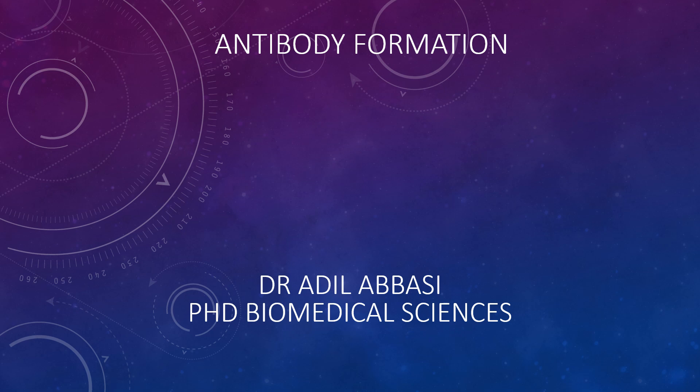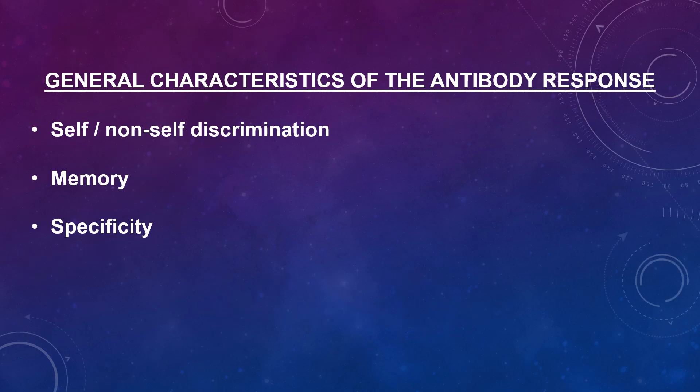Welcome to today's video on antibody formation. Let's look at the general characteristics of the antibody response. There is self-non-self discrimination, meaning the immune system normally distinguishes between self and non-self and only reacts against non-self. There is also the memory feature, which means the immune system remembers if it has seen an antigen before and reacts to secondary exposures to an antigen in a manner different than after primary exposure.